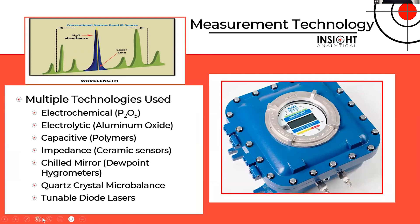We've used a lot of different tools to measure water vapor: electrochemical cells like P2O5 electrolytic cells, aluminum oxide cells, impedance cells based on ceramics, capacitor polymers, chilled mirror devices — where you cool down a mirror and look for condensation — dew point hygrometers, quartz crystal microbalances developed largely by DuPont, and of course tunable diode laser devices that measure water absorption depth.